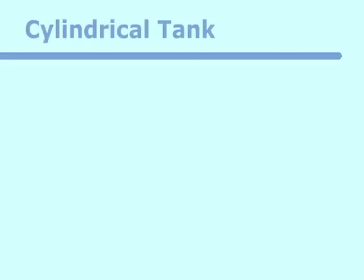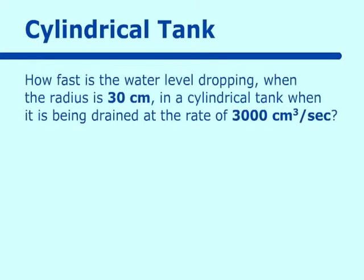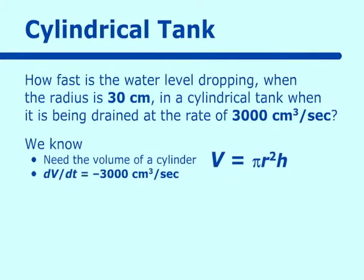The next problem is a cylindrical tank problem. How fast is the water level dropping when the radius is 30 centimeters in a cylindrical tank when it is being drained at the rate of 3,000 centimeters cubed per second? We know the volume of a cylinder is V = π r² h, and dV/dt is negative 3,000 centimeters cubed per second because it's dropping.